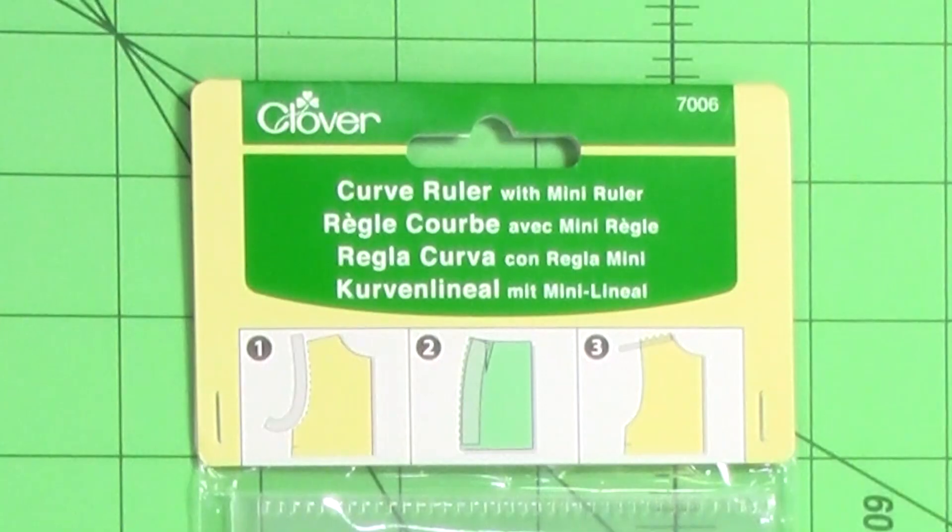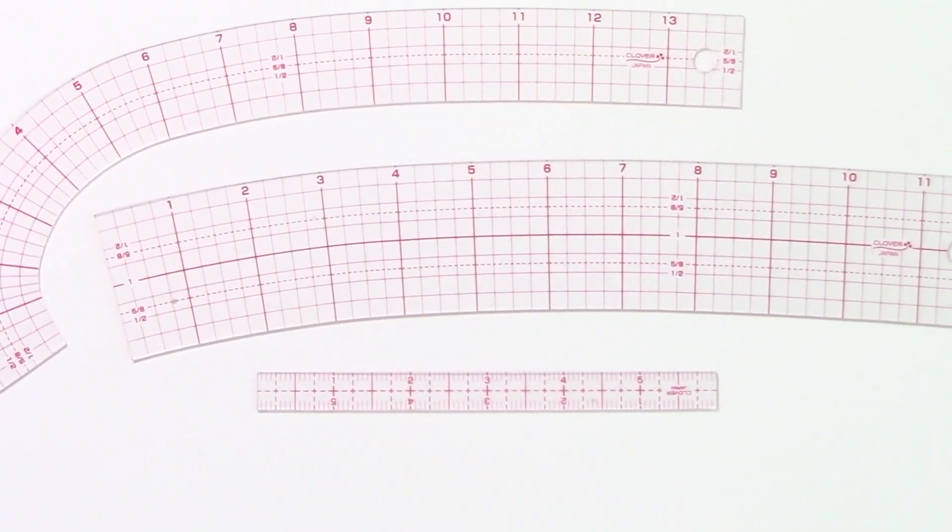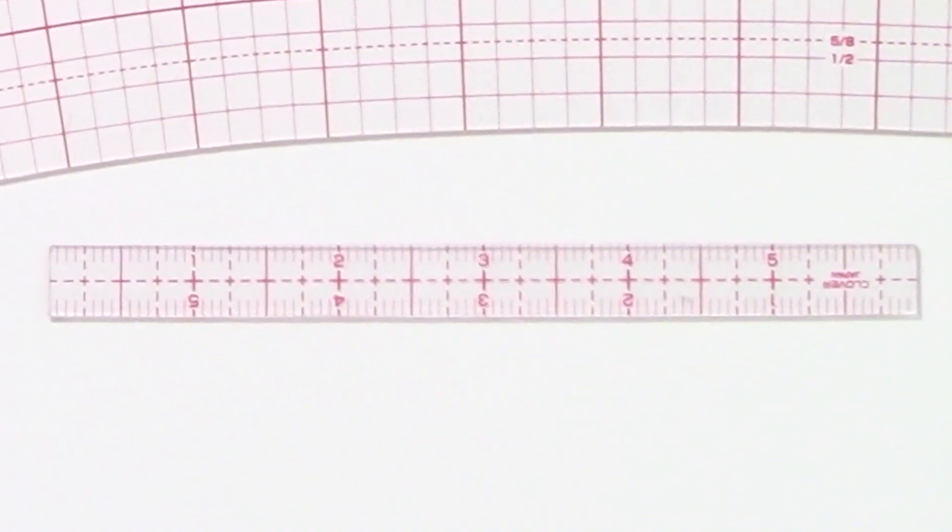This package of rulers features two different rulers made expressly for marking curves, plus a handy ½ inch wide mini ruler.